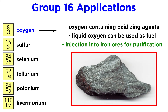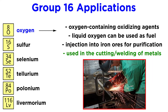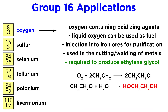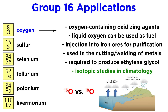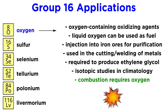Oxygen can be injected into iron ores to remove impurities of carbon and sulfur. It is often necessary in the cutting and welding of metals. Oxygen is required for the production of ethylene glycol from ethene. Isotopic ratios of oxygen-16 and oxygen-18 are used by paleoclimatologists in their research. And of course any process involving combustion requires oxygen to occur.